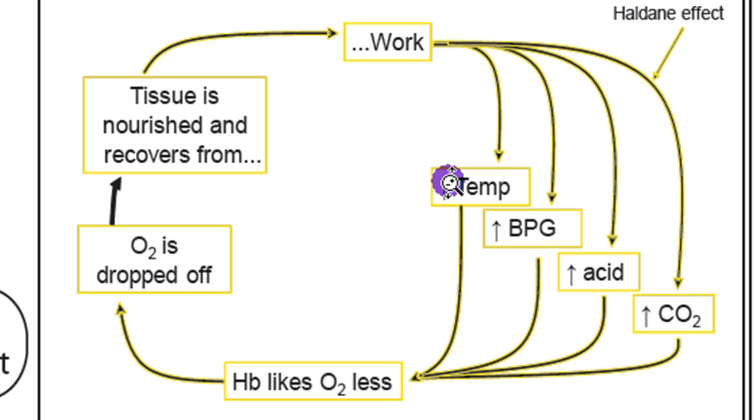As hemoglobin warms up, its affinity for oxygen decreases. Another less technical way to say that is hemoglobin likes oxygen less. So oxygen is dropped off, and the tissue is nourished by that extra oxygen.